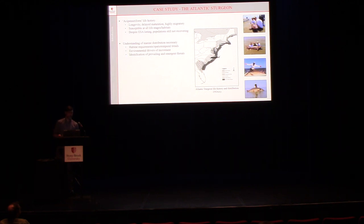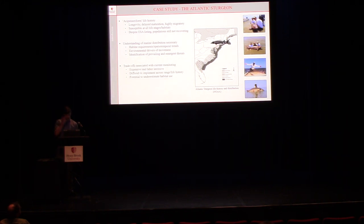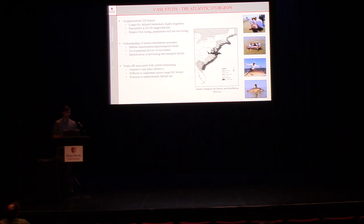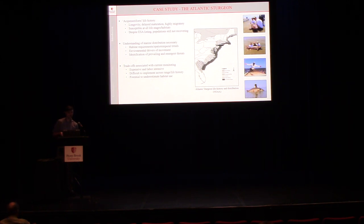Like most species that are rare or endangered, we are missing a lot of understanding of Atlantic Sturgeon marine distribution, and this is really necessary to plan management. For a lot of current modeling and monitoring with these fish, especially in offshore wind, there are a lot of projects going on but many are very site-specific. This makes it very easy to underestimate habitat use for this fish because it's very difficult to implement monitoring over the timeframe that they're in marine waters and across their entire life history.